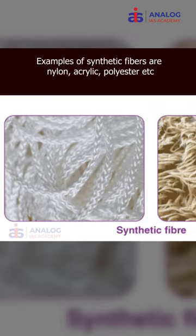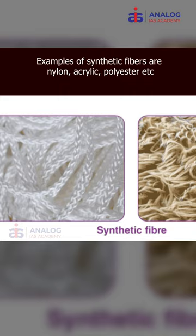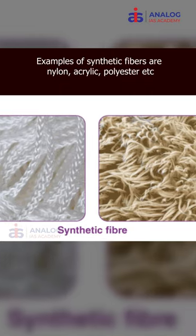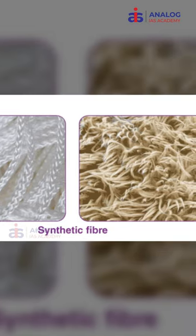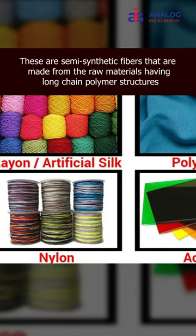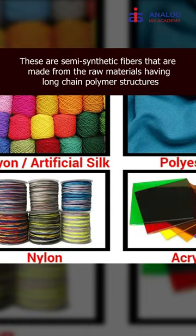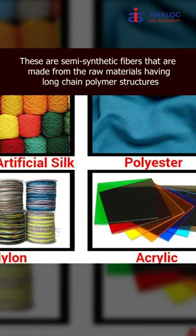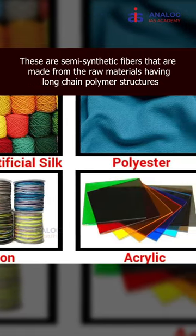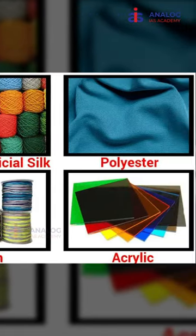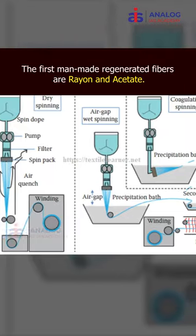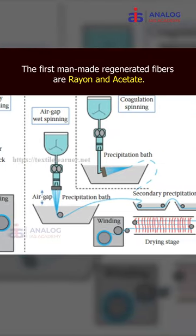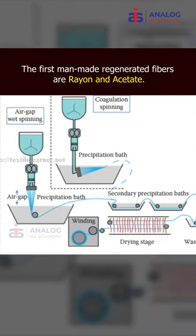Examples of synthetic fibers are nylon, acrylic, polyester, etc. These are semi-synthetic fibers that are made from raw materials having long-chain polymer structures. The first manmade regenerated fibers are rayon and acetate.